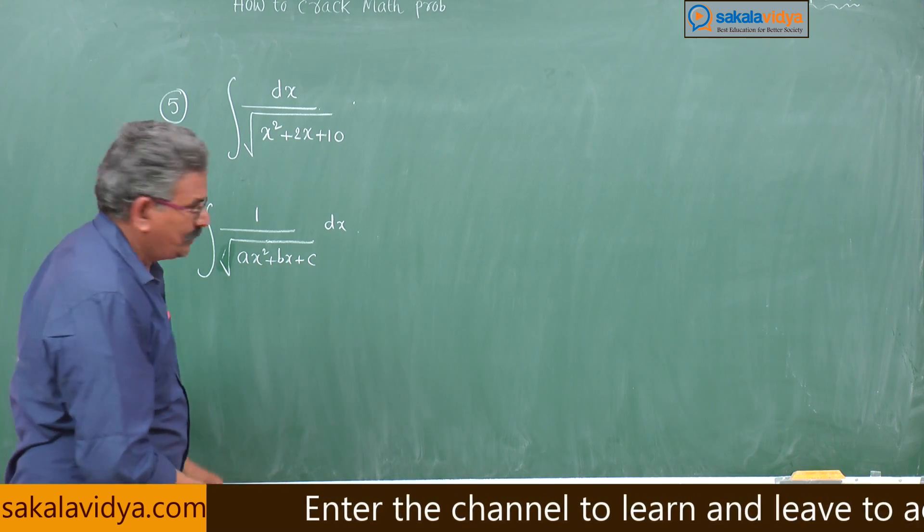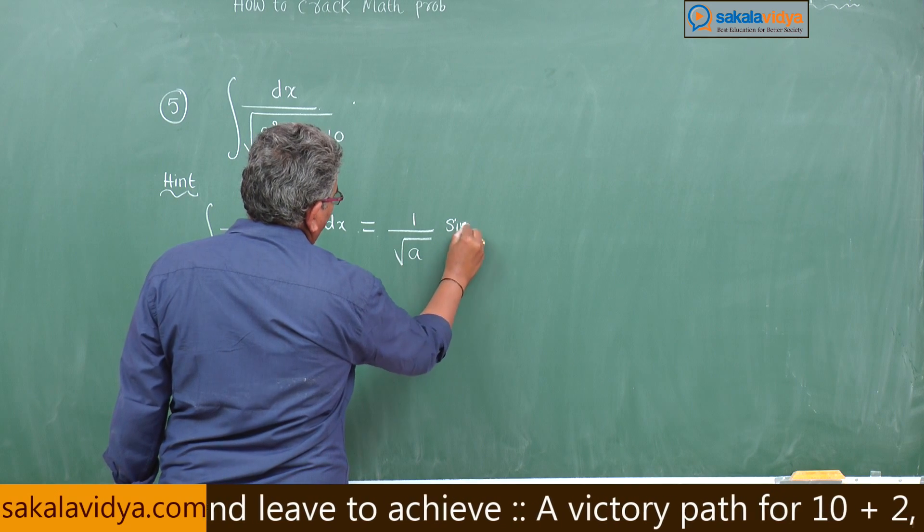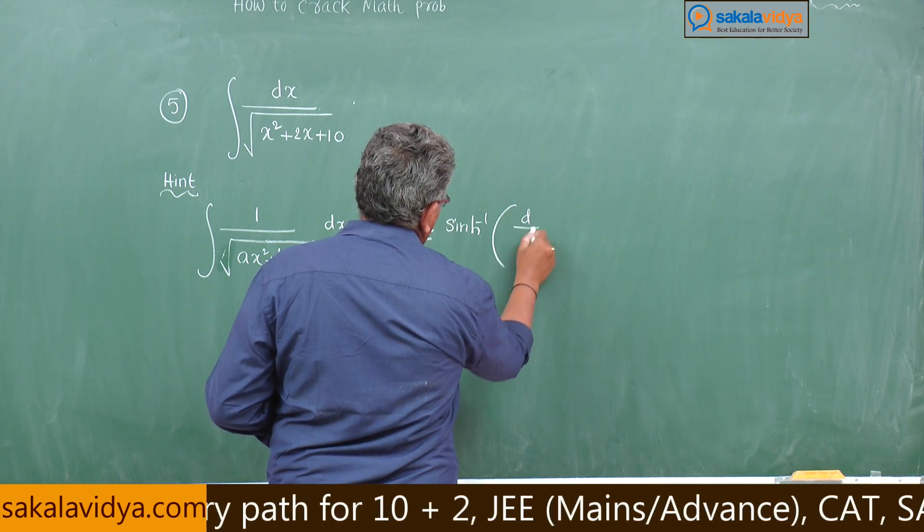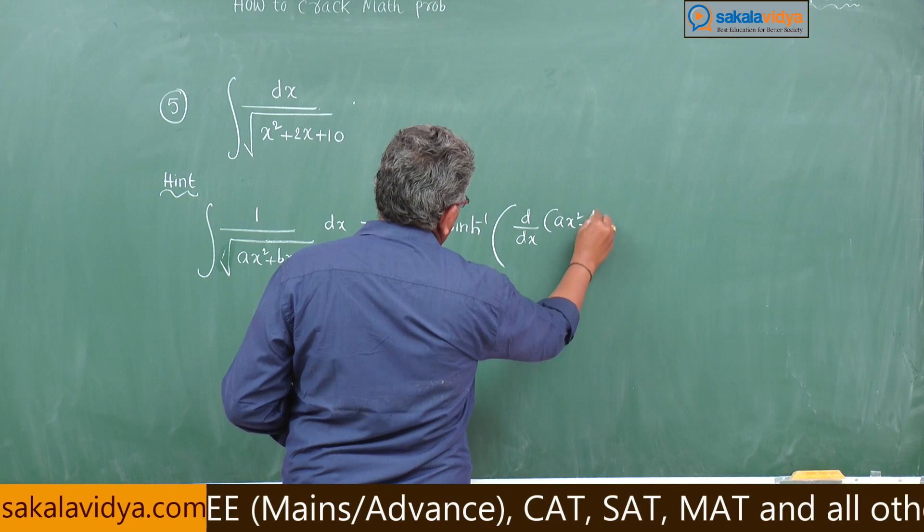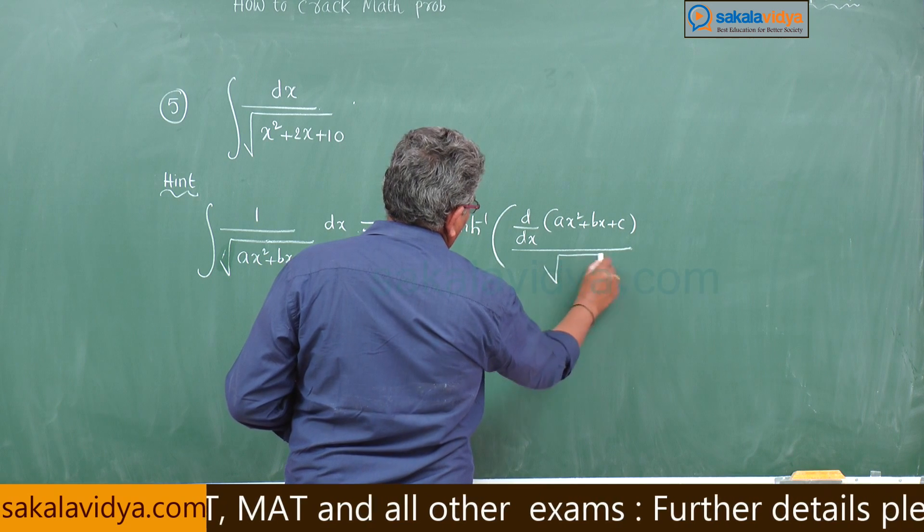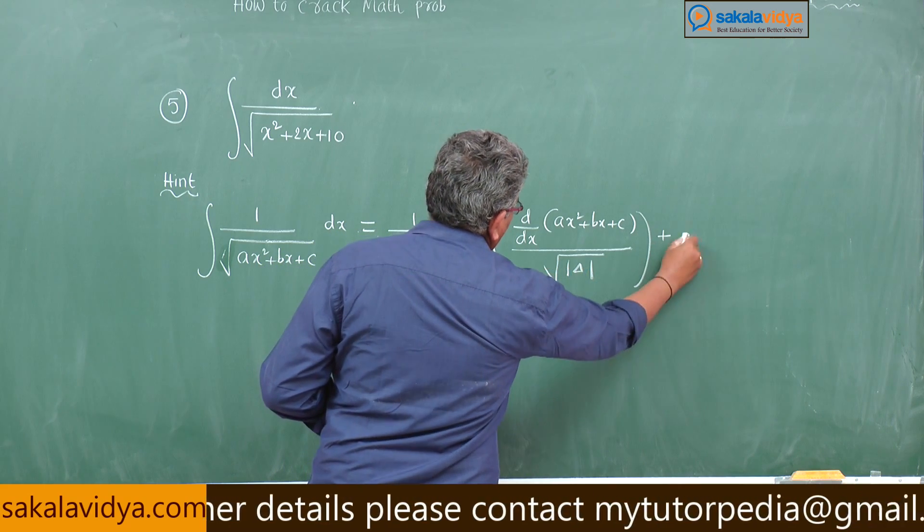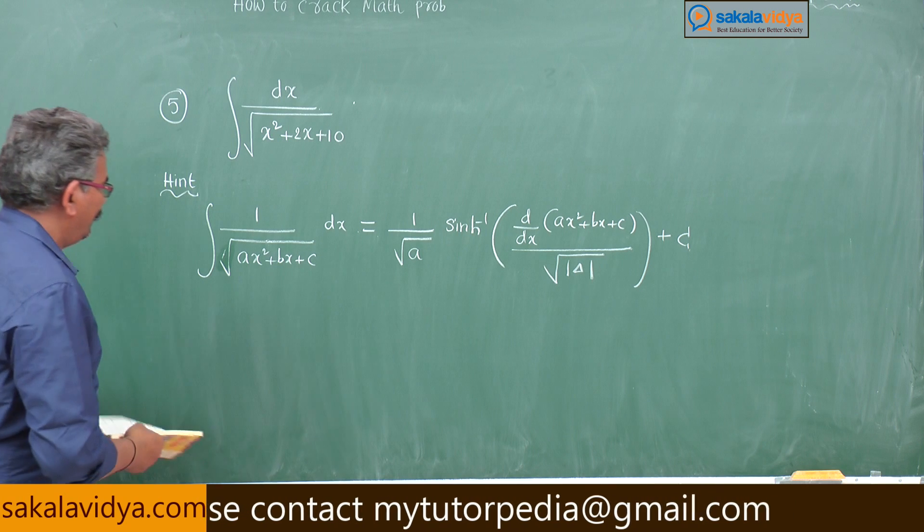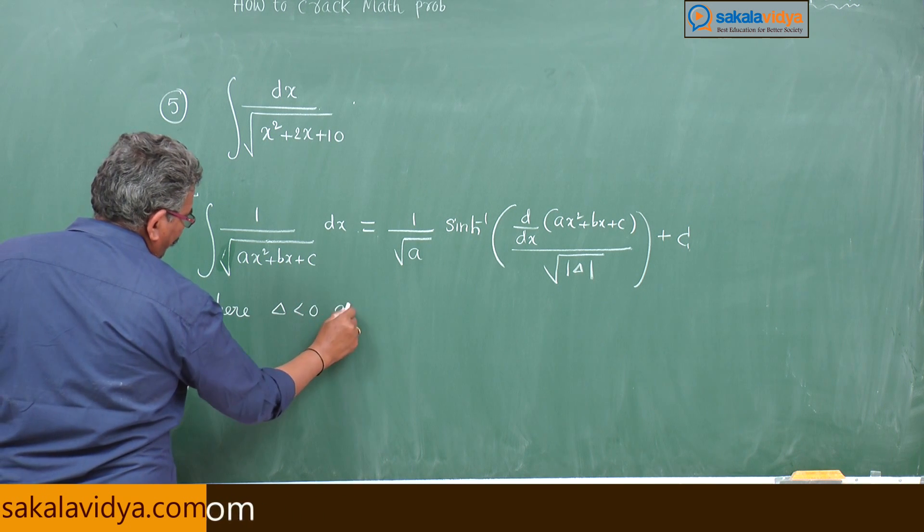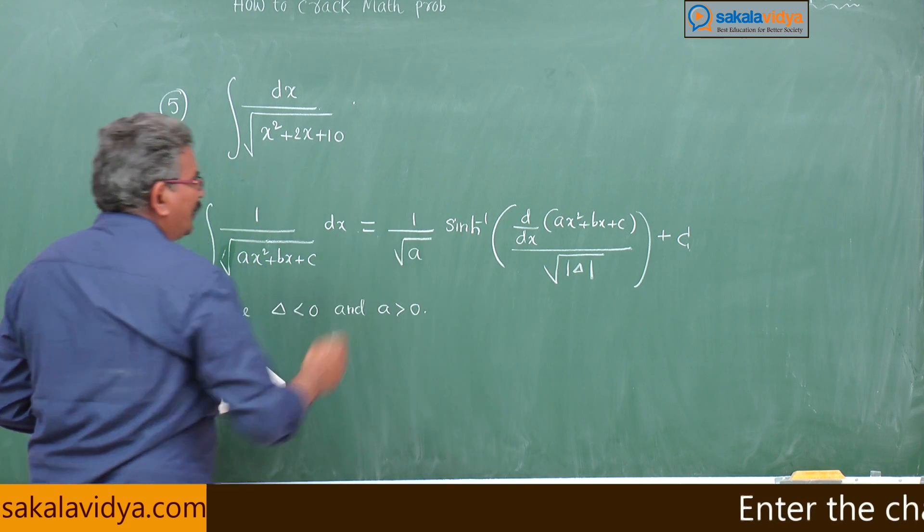Let us apply. This is equal to 1 by root a sinh inverse, d by dx of ax square plus bx plus c by root of mod of mod delta plus constant of integration, where delta is less than 0 and coefficient of x square is positive, a greater than 0, then only we have to apply the shortcut.